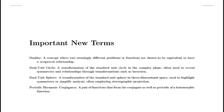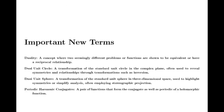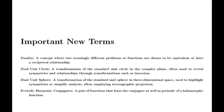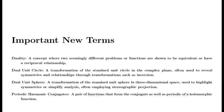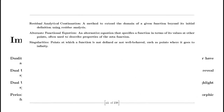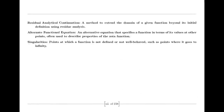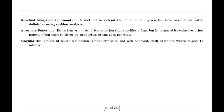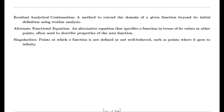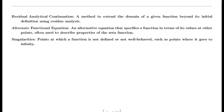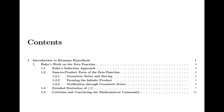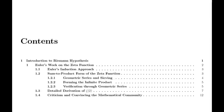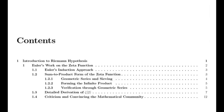As the years rolled on, mathematicians like David Hilbert and Henri Poincaré took up the zeta function, weaving it into the fabric of their own theories. Hilbert recognized its elegance, while Poincaré explored its implications in the realm of topology and analysis. Each contribution added layers of depth to the zeta function's narrative, intertwining it with the very essence of mathematics itself.